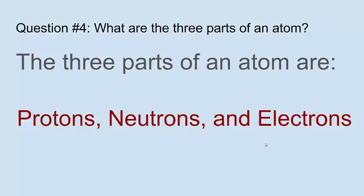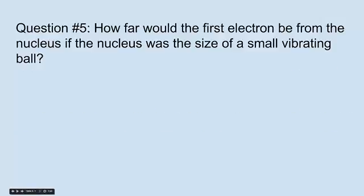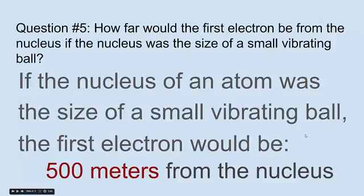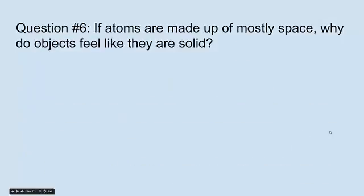Question five: How far would the first electron be from the nucleus if the nucleus was the size of a small vibrating ball? If the nucleus of an atom was the size of a small vibrating ball, the first electron would be more than five football fields, about 500 meters, from the nucleus.